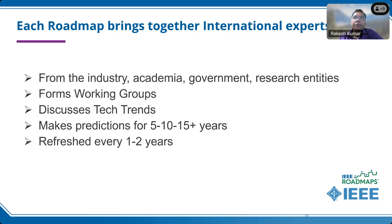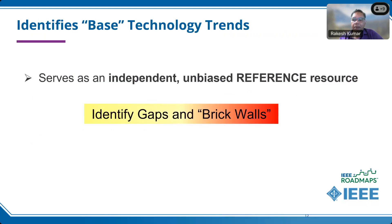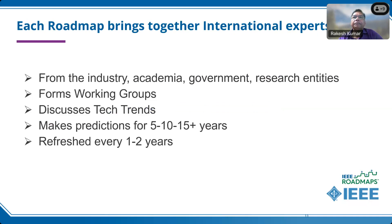What we do within IEEE are technical roadmaps — the basic technology that's required and predicted to happen. Companies will take that evolution and create internal product roadmaps, which tend to be very competitive. That's the reason we can pull in people from different parts of the industry, government, and other institutions to help decide what technologies are coming. We bring together people from industry, academia, government, and research entities to form working groups. For each roadmap there are working groups — sometimes called focus teams — that discuss details of their own technical trends. Some roadmaps go out five years, some ten to fifteen years, and maybe even longer. Roadmaps are refreshed every one to two years, with a complete rewrite every two years.